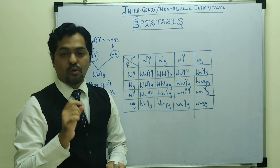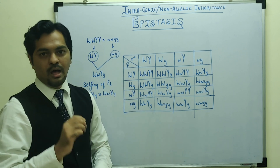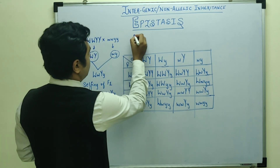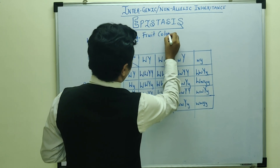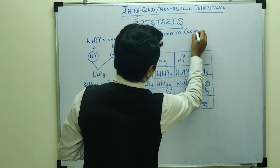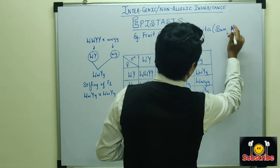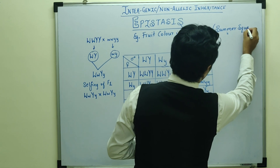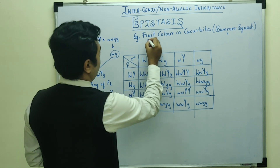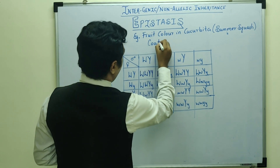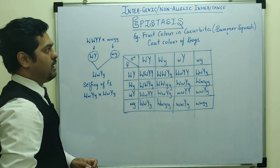In every video I have given you a trick that will help you to understand the concept. For Epistasis, the example is fruit colour in a plant that is Cucurbita, also known as Summer Squash or Cucurbita Peppo. Another example is the coat colour of dogs, which is also controlled by Epistatic intergenic inheritance.